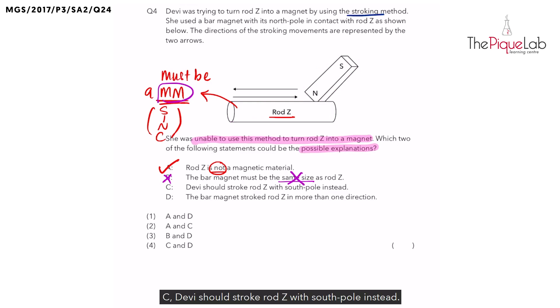Option C: Devi should stroke rod Z with south pole instead. So in our diagram, we can see that Devi is using the north pole to stroke the rod. Is that wrong? No. As long as she uses the same pole, it doesn't matter whether north or south. So if she is using the north pole in this case, as long as she uses the north pole throughout the stroking, the rod will be able to become a magnet. So this explanation is wrong. It does not matter whether north or south as long as she uses the same pole throughout.